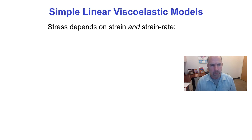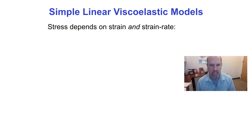The simplest class of viscoelastic models are linear viscoelastic models, in which the stress depends on both the strain and the strain rate — so t is a function of epsilon and epsilon dot.